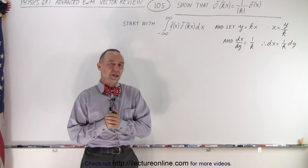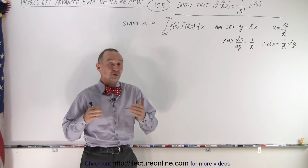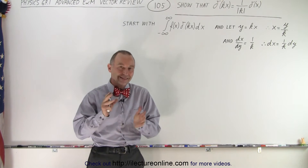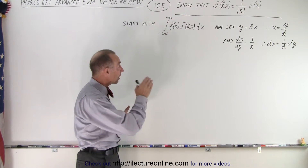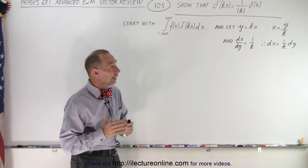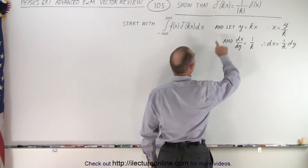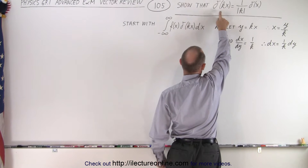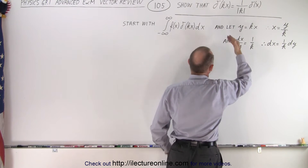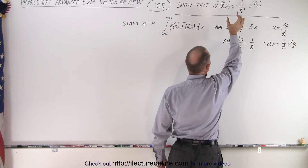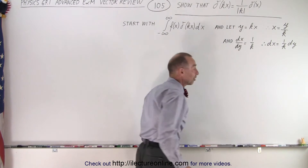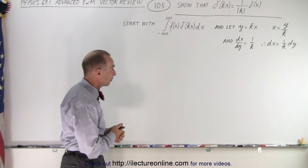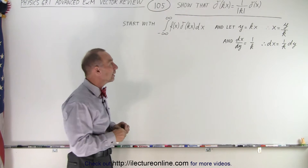Welcome to Electronline. Another very useful form of the Dirac delta function is when the x inside the function is multiplied by some constant k. What we're going to show is that if we have a delta function that looks like delta of kx, where k is just any constant, that is the same as 1 over the absolute value of k times the delta function of x.